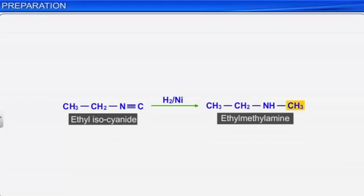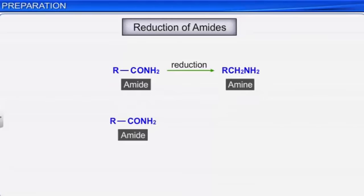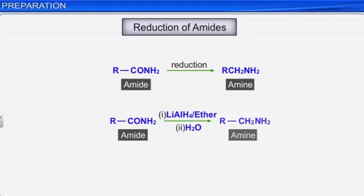Another method for the preparation of amines is the reduction of amides. Amides on reduction with lithium aluminium hydride yield amines. For example, ethanamide on reduction with lithium aluminium hydride gives ethanamine.